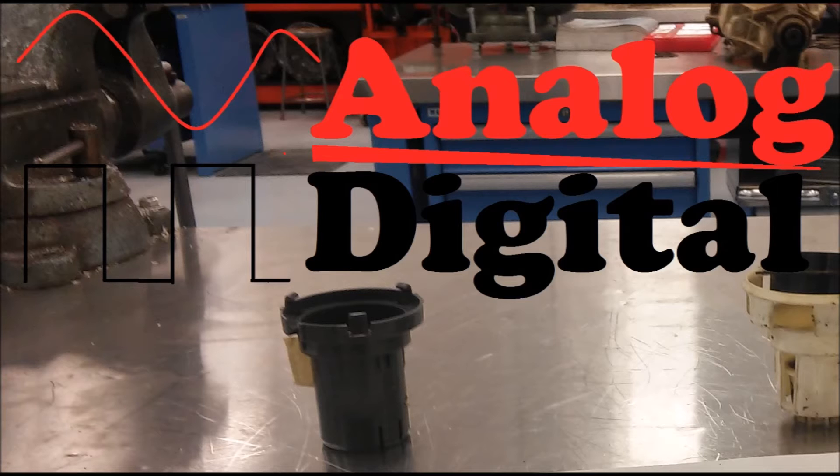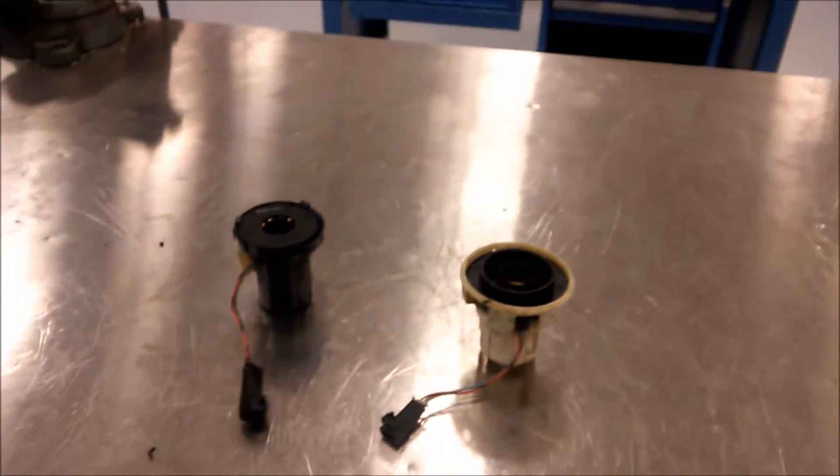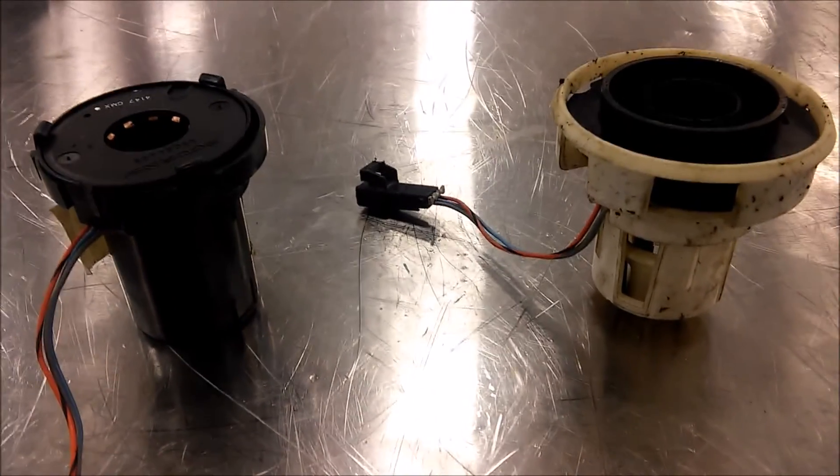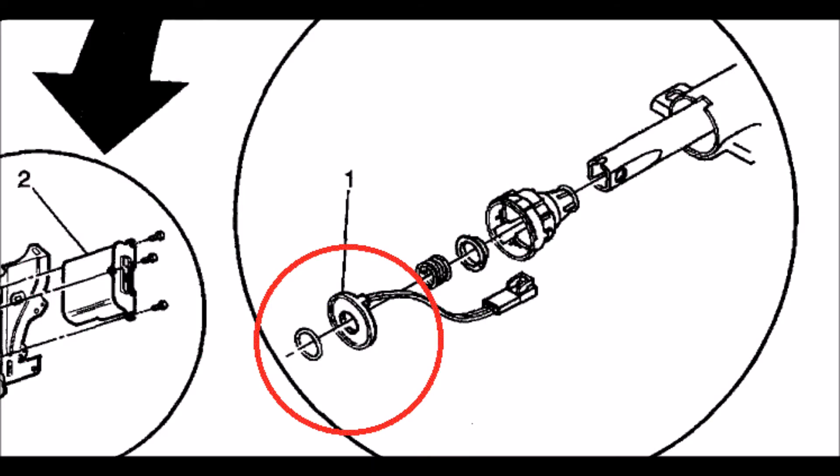Now let's look at what steering angle sensors look like mechanically. Here we have two GM steering angle sensors. They are contained in plastic housings in which they attach to the steering column.